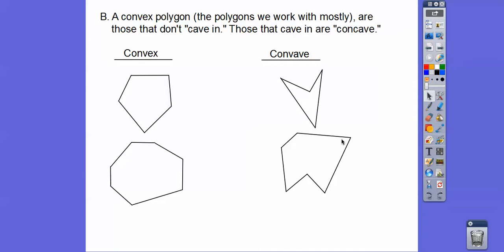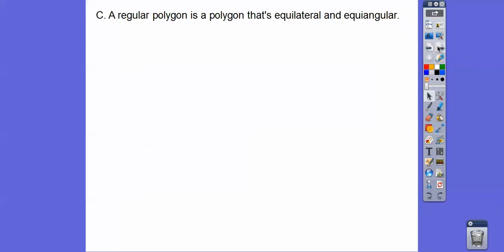So we work with these sometimes, you guys, but most of the time we're going to be working with these. And in this lesson, we're going to be working with these. So here we go. A regular polygon is a polygon that's equilateral and equiangular. That just means all the sides are equal and all the angles are equal. Like a stop sign. A stop sign is a regular octagon. Eight sides, all the sides are equal, all the angles are equal on a stop sign.